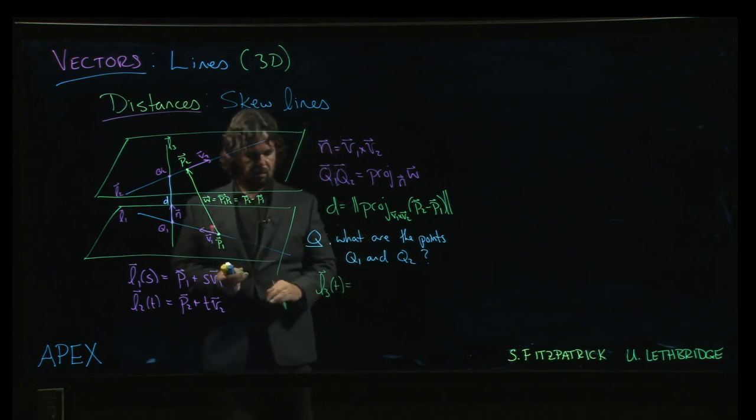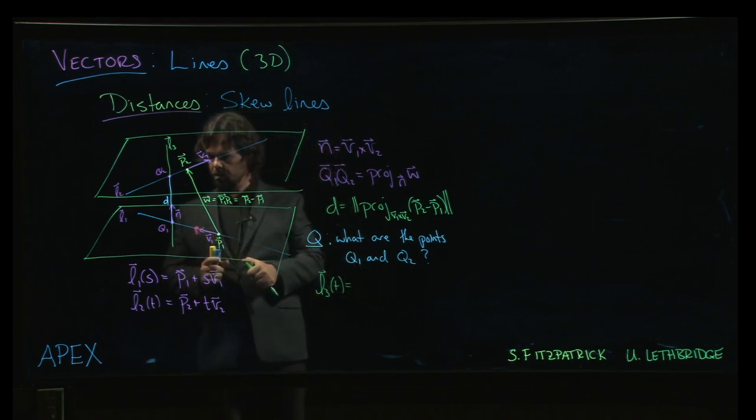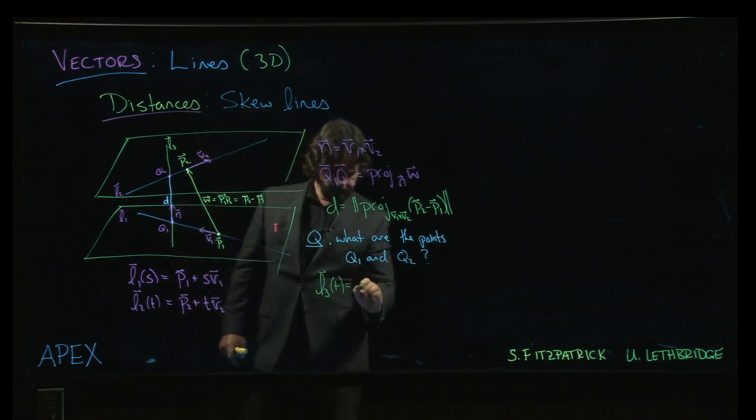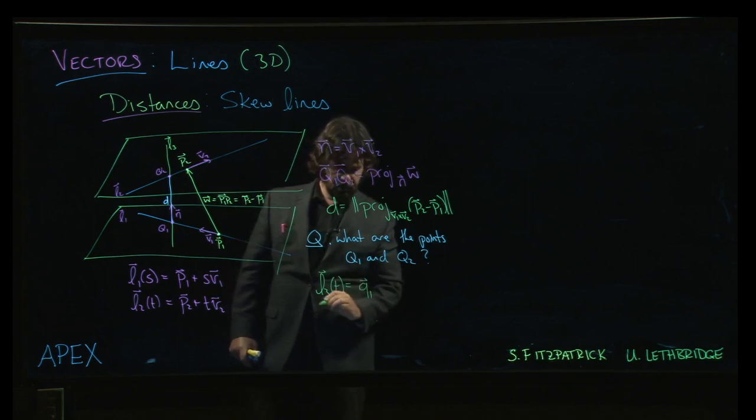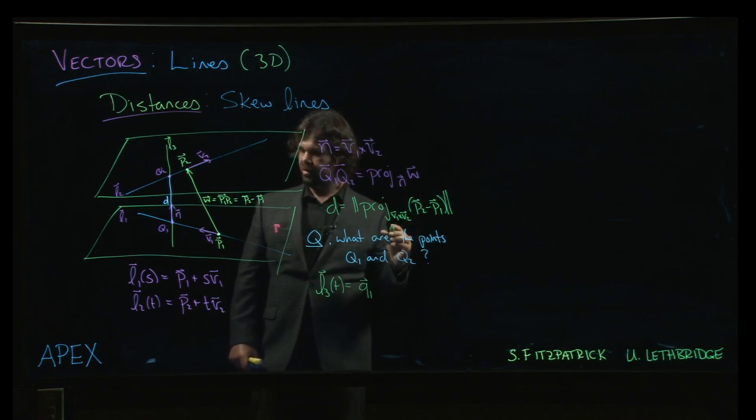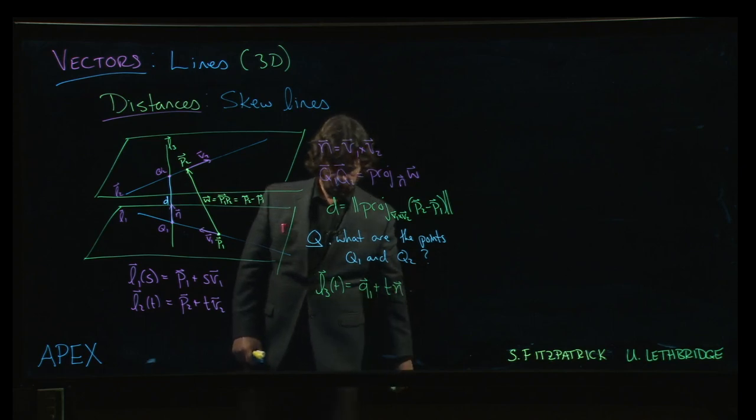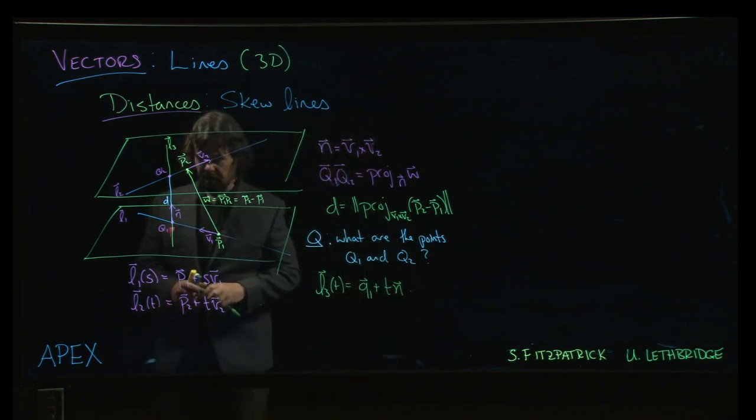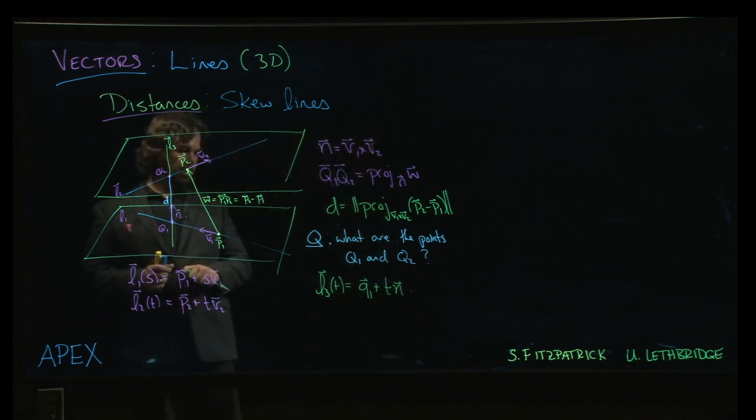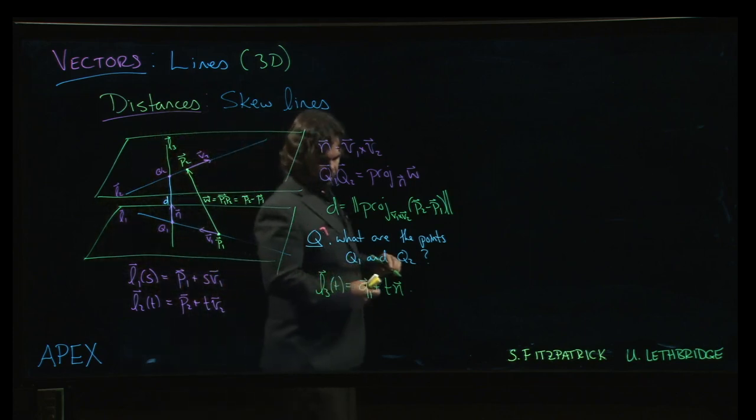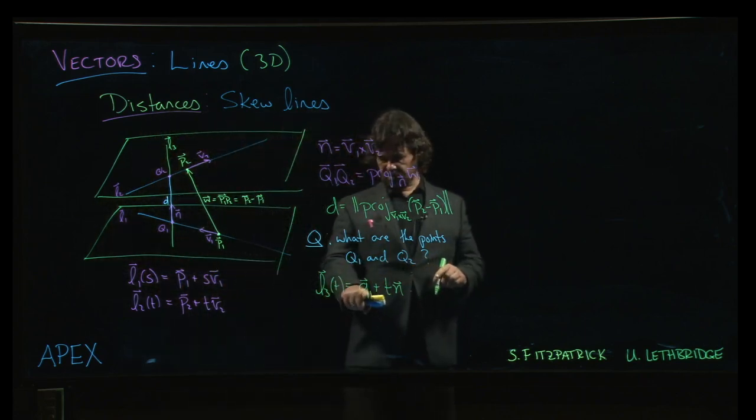So this is going to be, now I don't know what Q1 is, so I'm just going to call it Q1. It passes through the point Q1 in the direction of that normal vector. So we still have to find that normal vector.